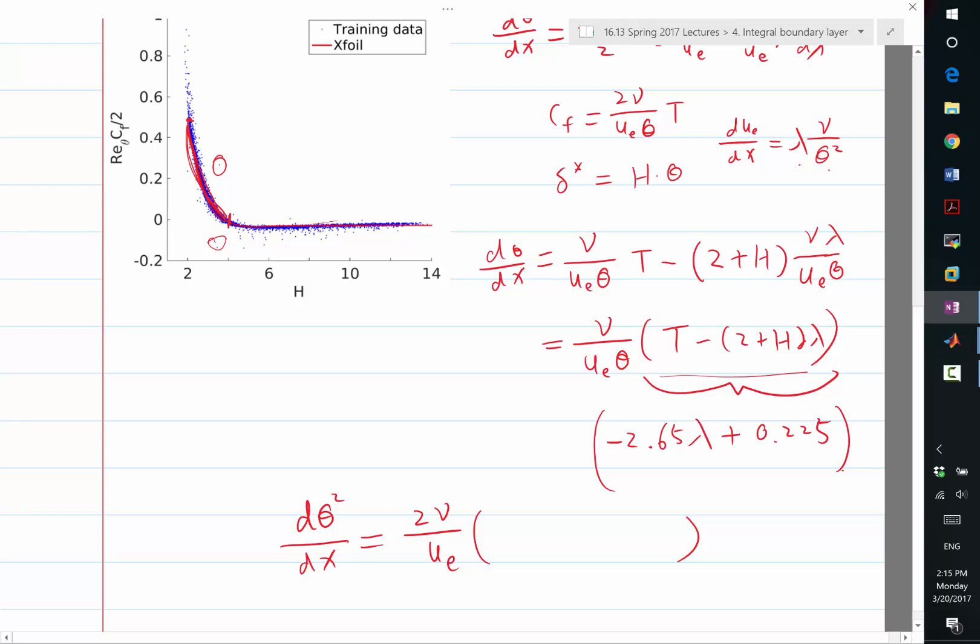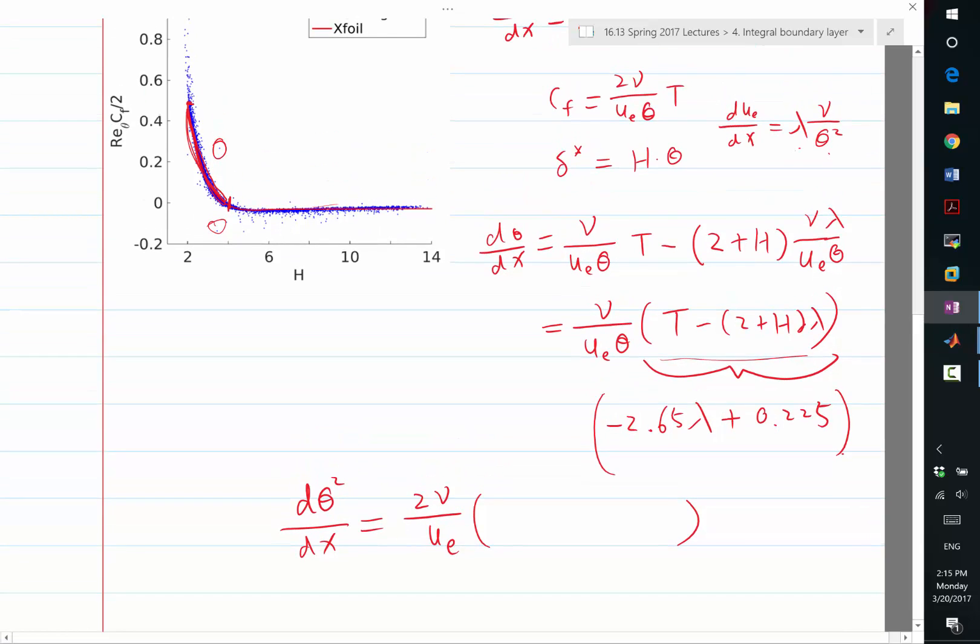Okay, so there is one tricky thing I haven't talked about yet. In the beginning, we solved this equation from the stagnation point, right? At the stagnation point, what is ue? Zero, right? So we can't really start solving this equation from the stagnation point.